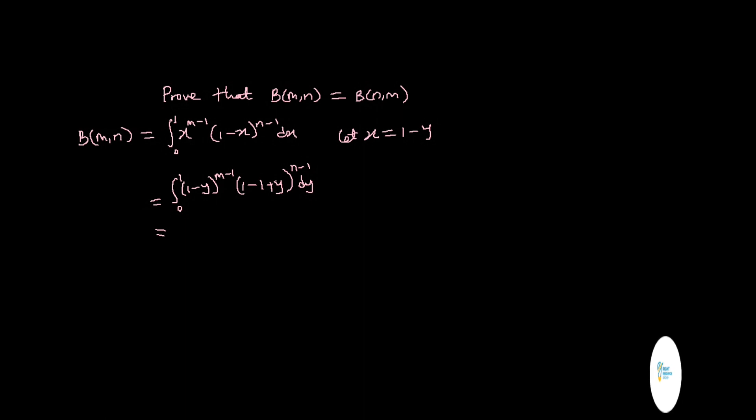Let's now do this properly. We are going to have integral from 0 to 1 of 1 minus Y raised to the power of M minus 1, and this of course is going to give Y raised to the power of N minus 1 dY.